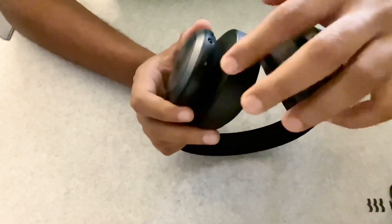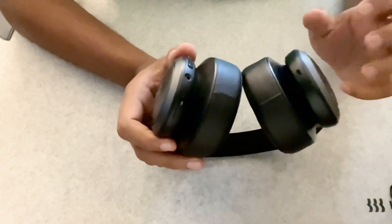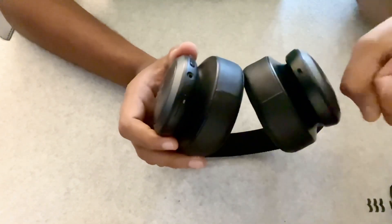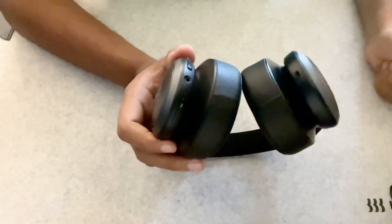In the third mode, which is called the talk-through mode, it reduces your music volume so that you can feel that the music is still playing in the background, but at the same time you can talk to the person who's sitting next to you.